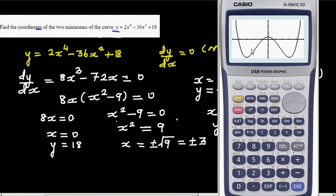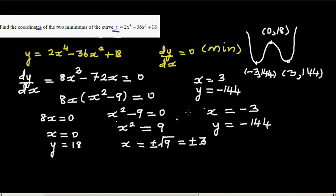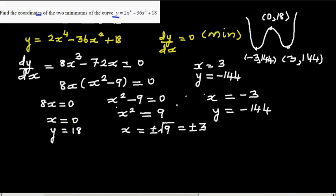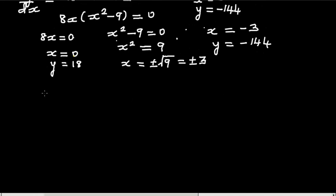And so this is the graph. So you go G-Solv minimum: minus 3, minus 144. And if you press this replay key you'll get 3 comma minus 144, and then go G-Solv maximum.